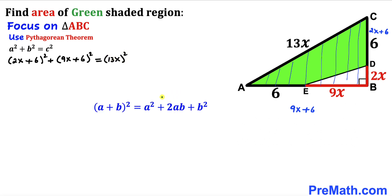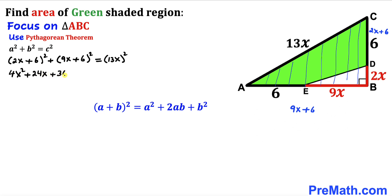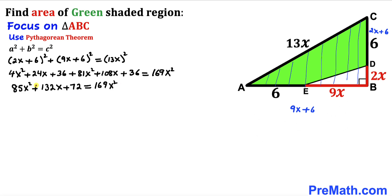Recalling the identity (A + B)² = A² + 2AB + B², we apply it to both binomials on the left-hand side. Expanding gives us 4x² + 24x + 36 plus 81x² + 108x + 36 equals 169x².